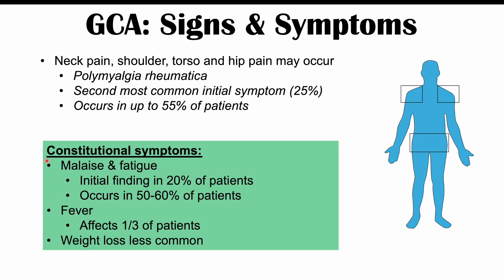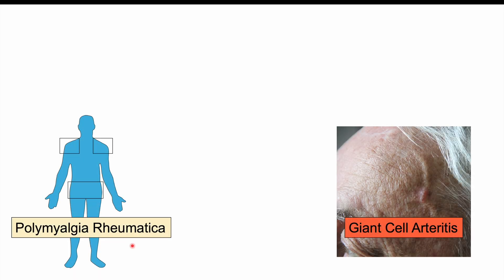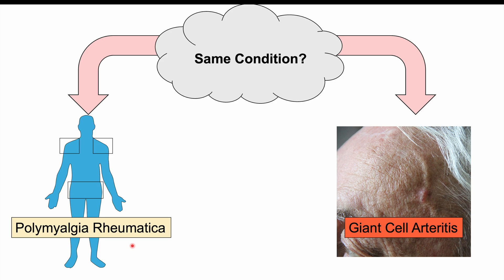Constitutional symptoms can also occur in GCA, including malaise and fatigue — an initial finding in 20% of patients and a common finding in 50 to 60% overall. Fever affects an estimated one-third of patients, and weight loss can occur but is less common. There is an ongoing hypothesis as to whether GCA and polymyalgia rheumatica may actually be the same condition or different manifestations on a spectrum, given the high overlap between patient groups.